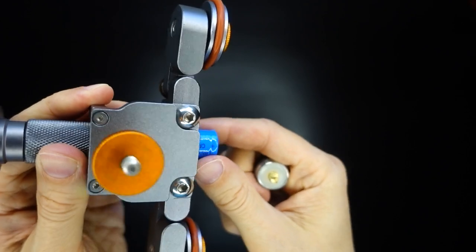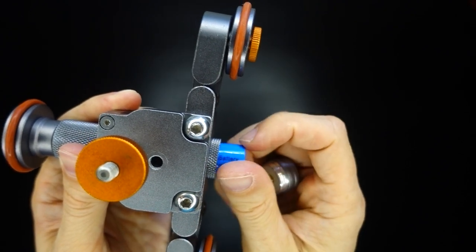To reverse the direction of the motor, you just pull out the battery, reverse it, and pop it back in.